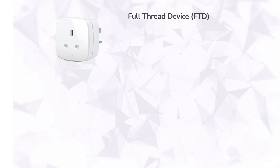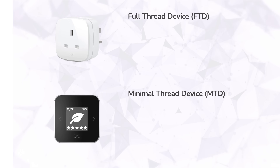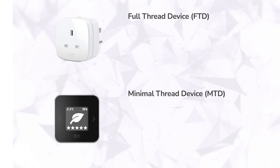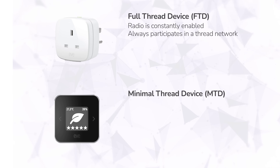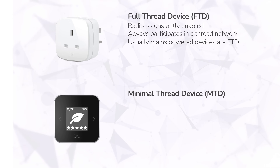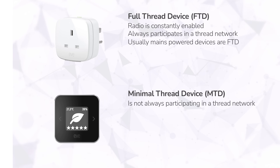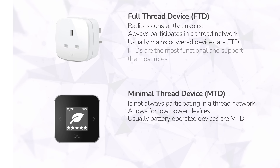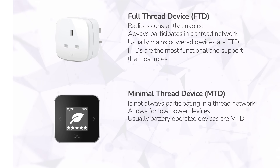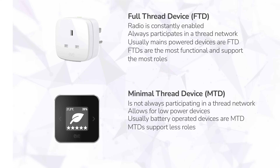In a Thread network there are two different types of devices you need to know about: a full thread device and a minimal thread device. These are further broken down into a couple of subtypes, but let's keep things simple for now. A full thread device always has its radio on and is constantly listening and participating in the Thread network, while a minimal thread device exists to support and allow for low power devices. Full thread devices support the most roles in a network, and minimal thread devices support fewer roles. There are also additional sub-roles that devices can play in a Thread network.